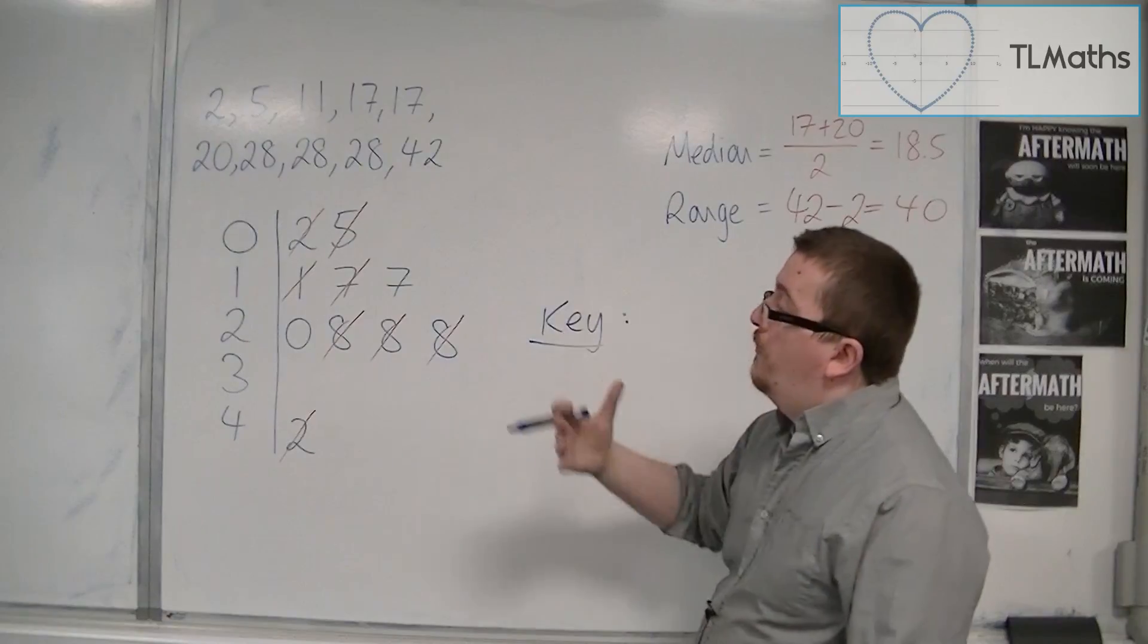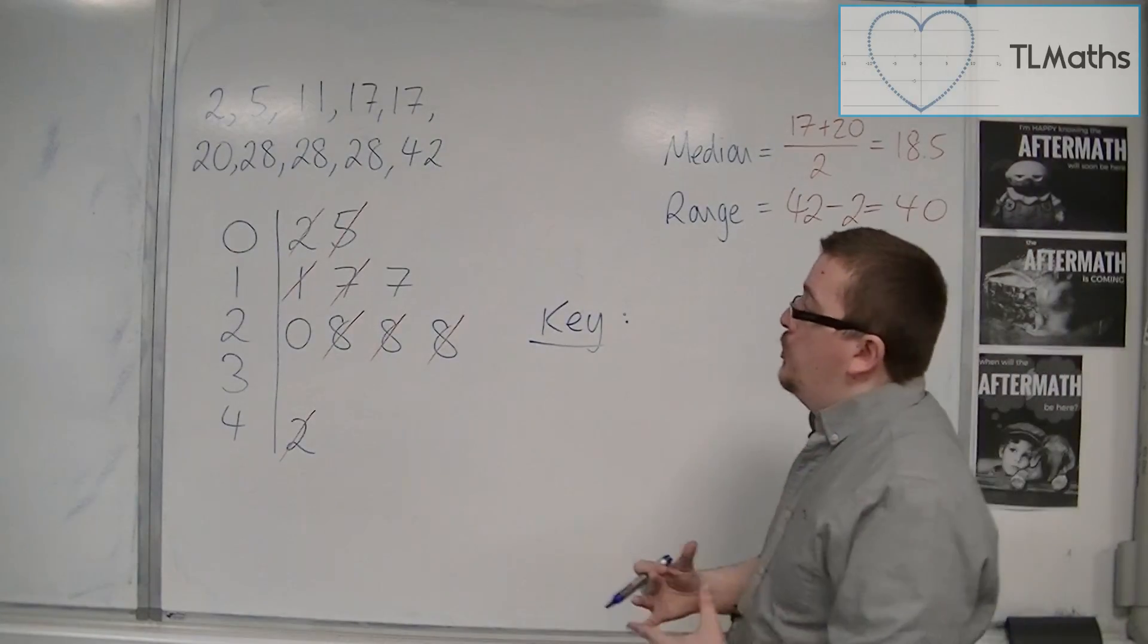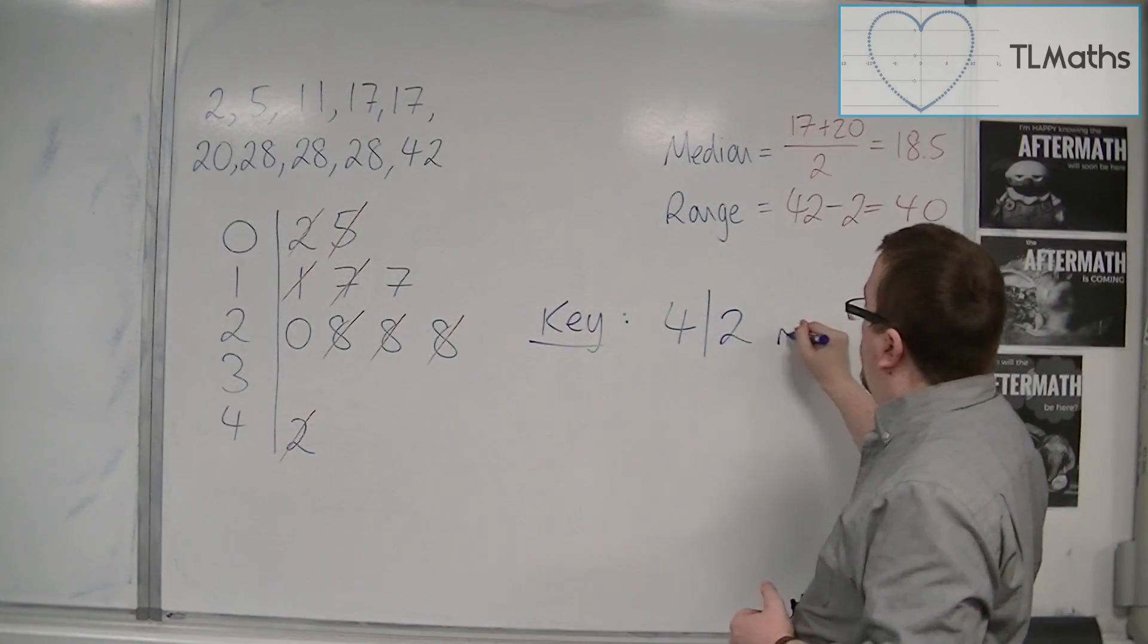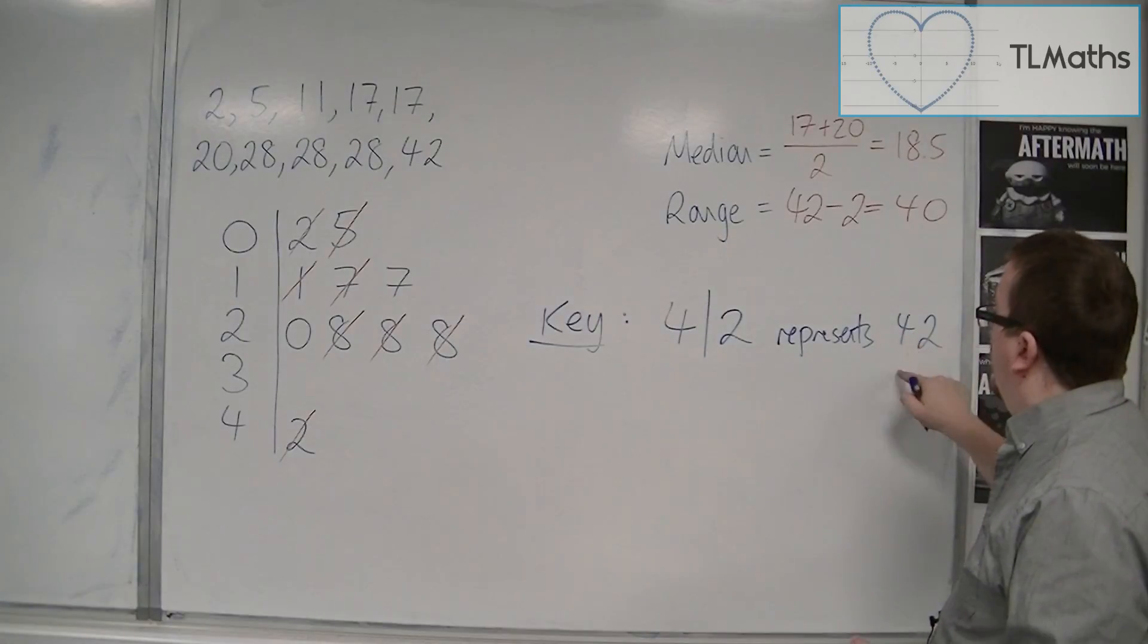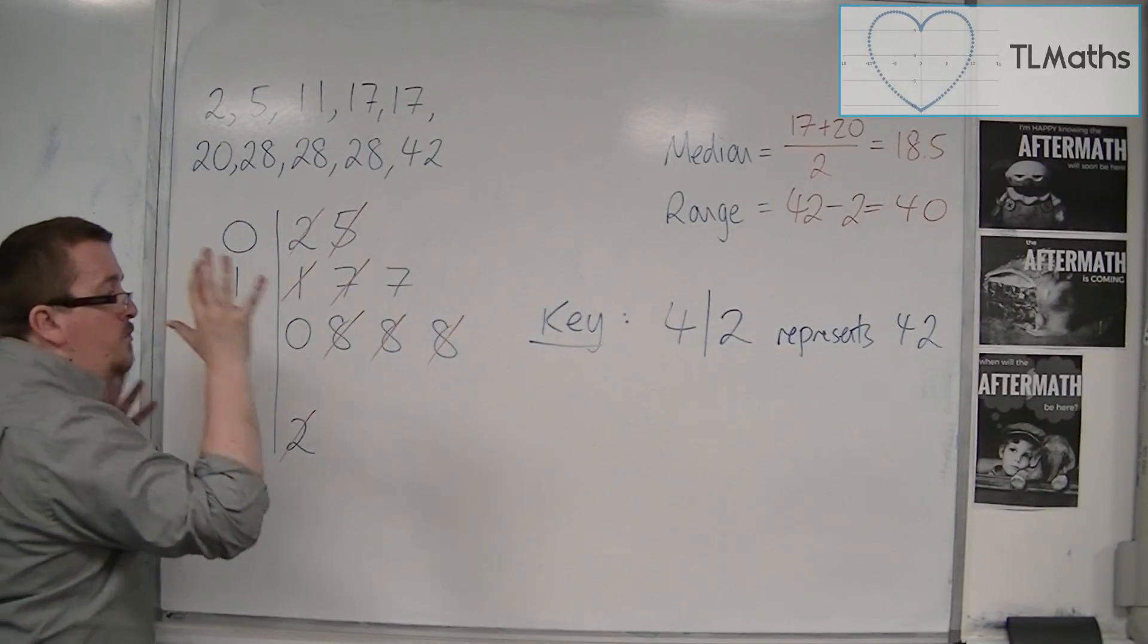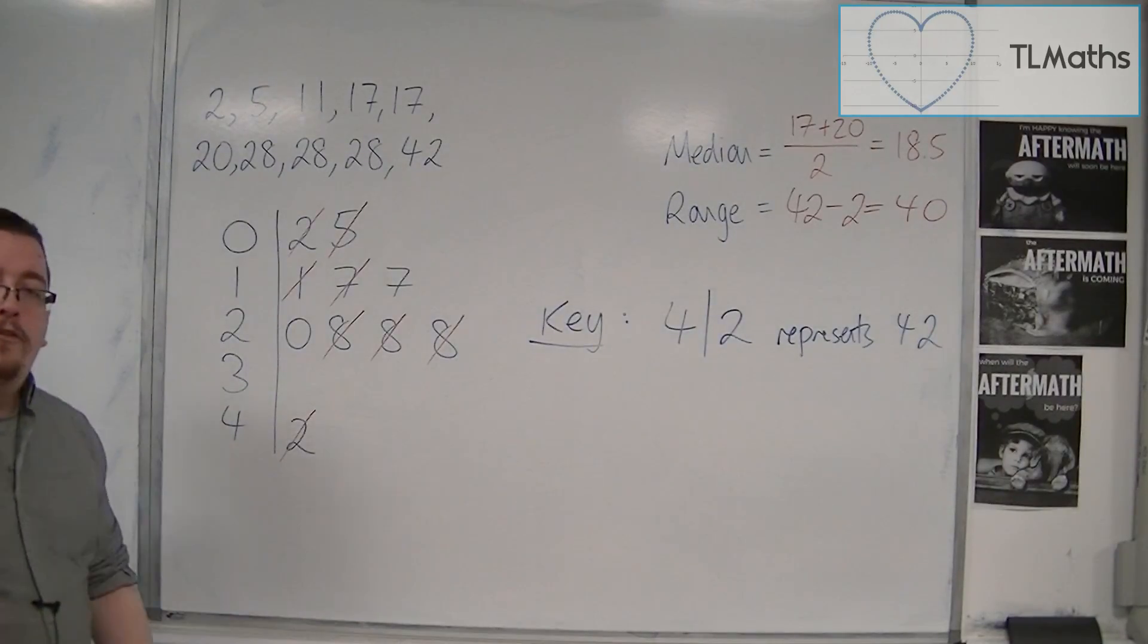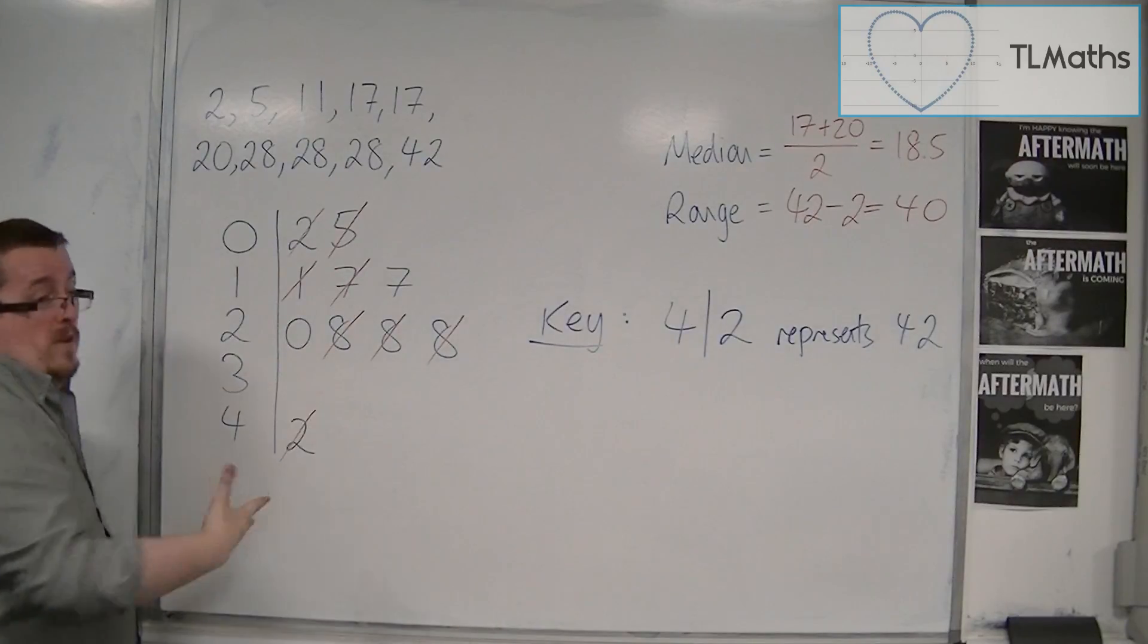And every stem and leaf diagram should come with a key because ultimately this stem and leaf diagram could represent 0.2, 0.5, 1.1, 1.7, or something other than that. So the key is essential in understanding what this represents, and you can just choose any old value. So I can choose that 4 line 2, and what does this mean? It represents 42 rather than 4.2, for example. So the key is important in making sure that the examiner knows what you're talking about. I mean, if you were going to use this outside of the exam room, then the key really needs to be clearly put, otherwise this could represent anything.